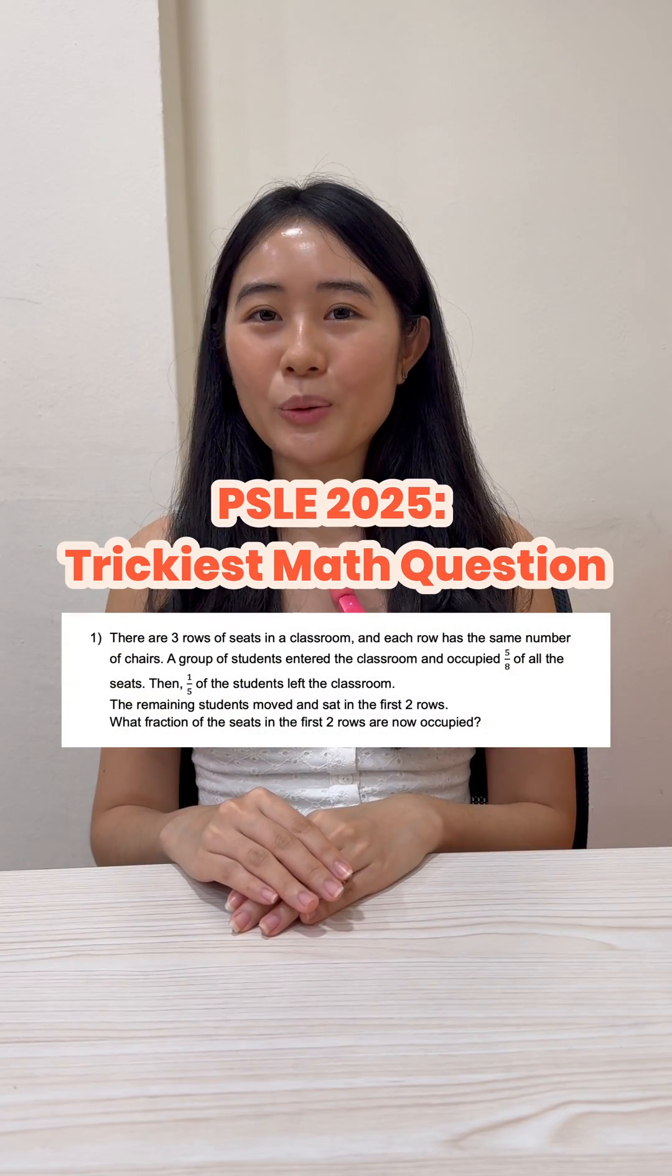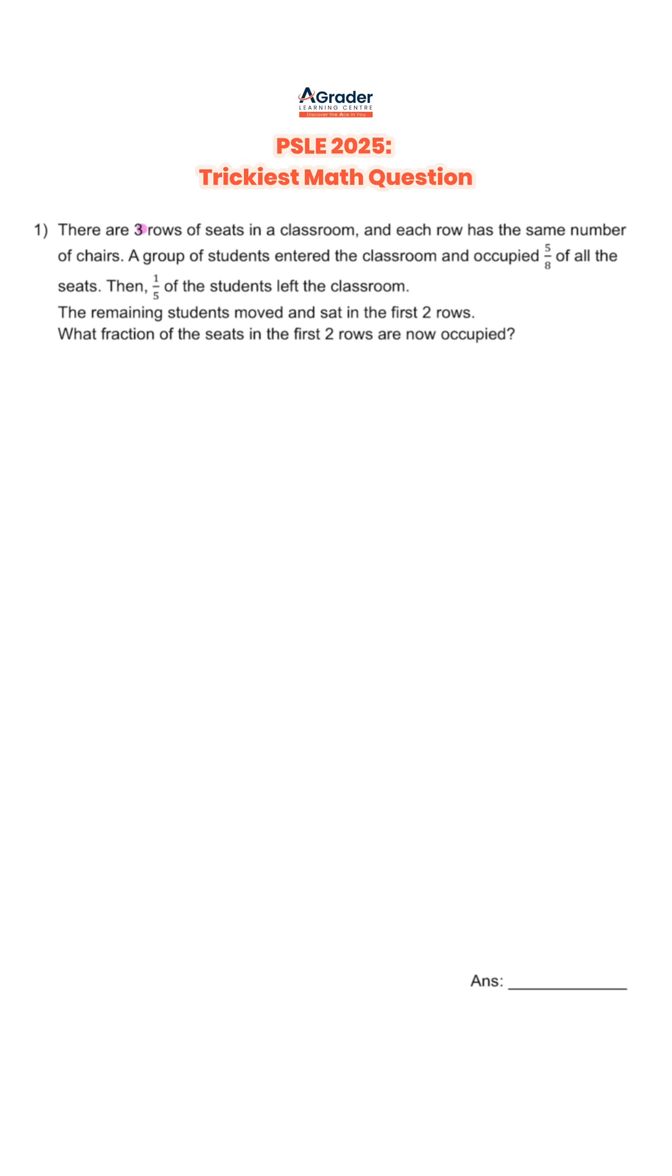This is one of the trickiest math PSLE questions this year. Do you get it right? There are three rows of seats in a classroom and each row has the same number of chairs. A group of students entered the classroom and occupied 5 over 8 of all the seats. Then, one-fifth of the students left the classroom. The remaining students moved and sat in the first two rows. What fraction of the seats in the first two rows are now occupied?